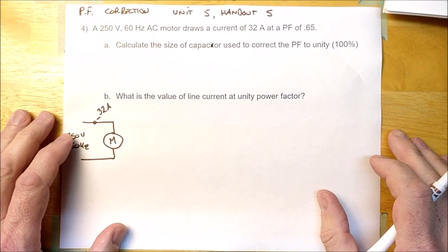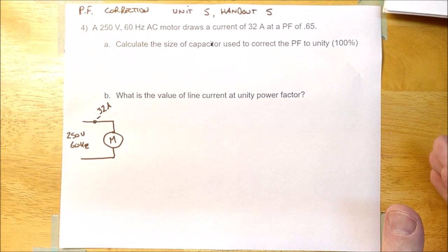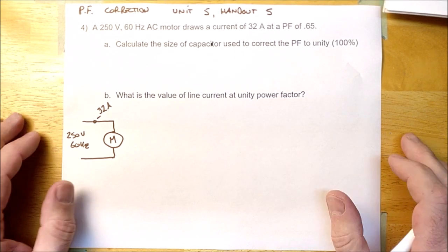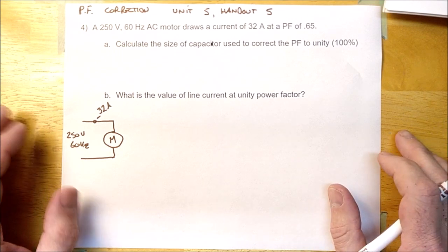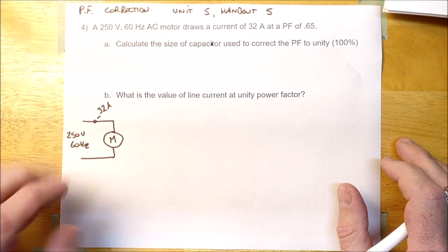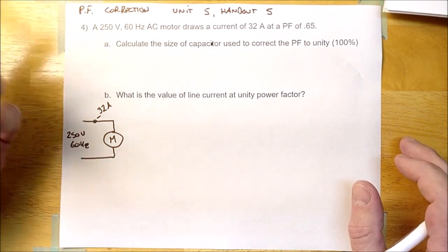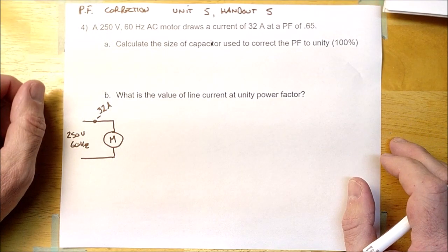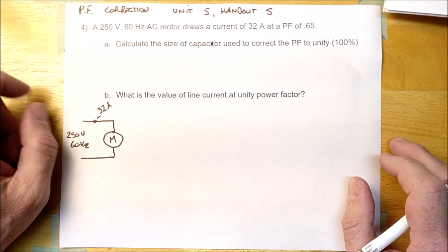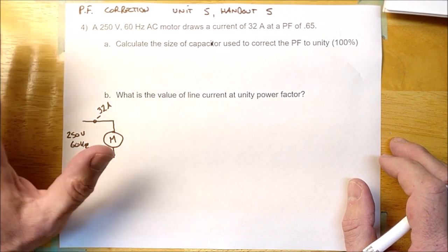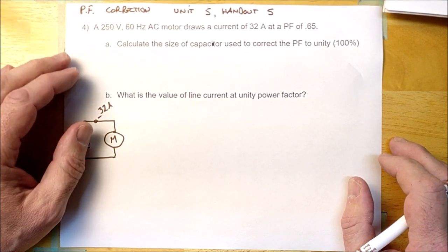Hey guys, welcome back. We've been spending a bit of time talking about AC power — true power, reactive power, apparent power, and power factor, and how to calculate all that. And now we're going to be talking about power factor correction. Before we do this question, which is coming from Unit 5, Handout 5, number 4, we need to talk about why we even bother with power factor correction.